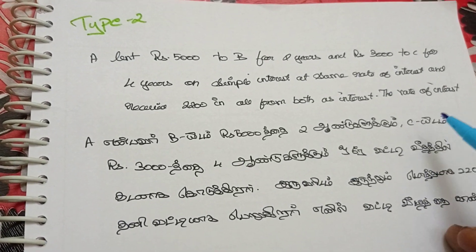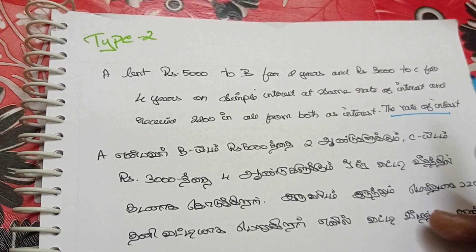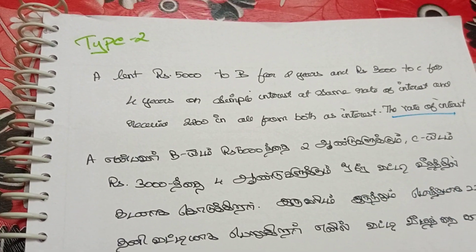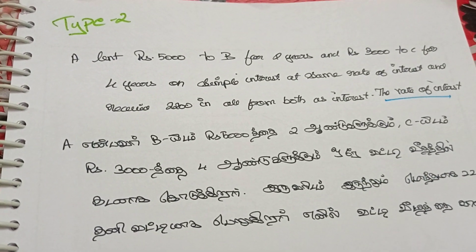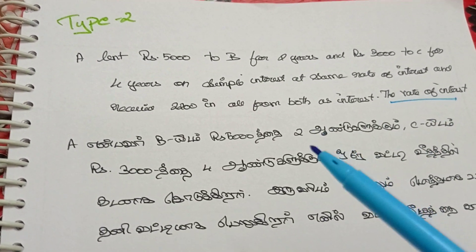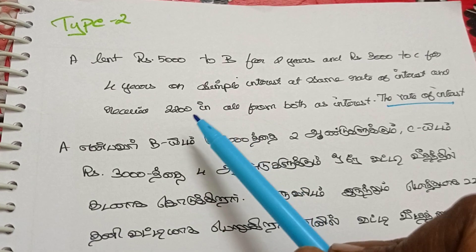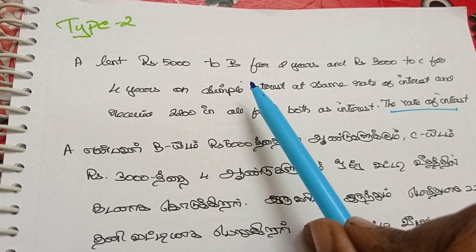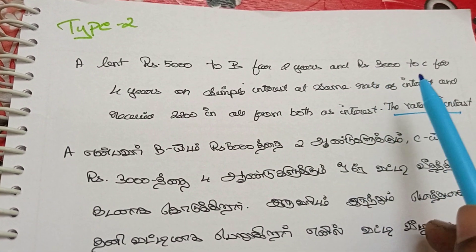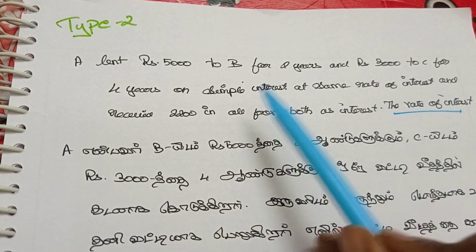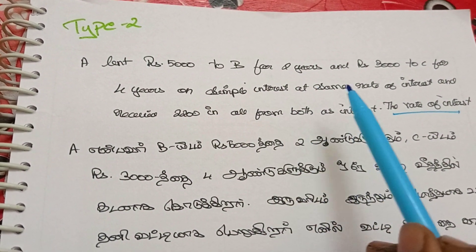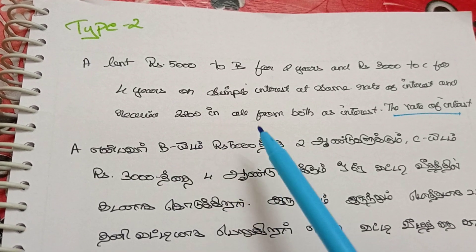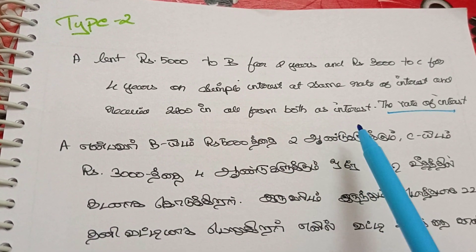This is Type 2. It is a little complicated. A lent Rs.5,000 to B for 2 years and Rs.3,000 to C for 4 years on simple interest at the same rate of interest, and received Rs.2,200 in all from both as interest.